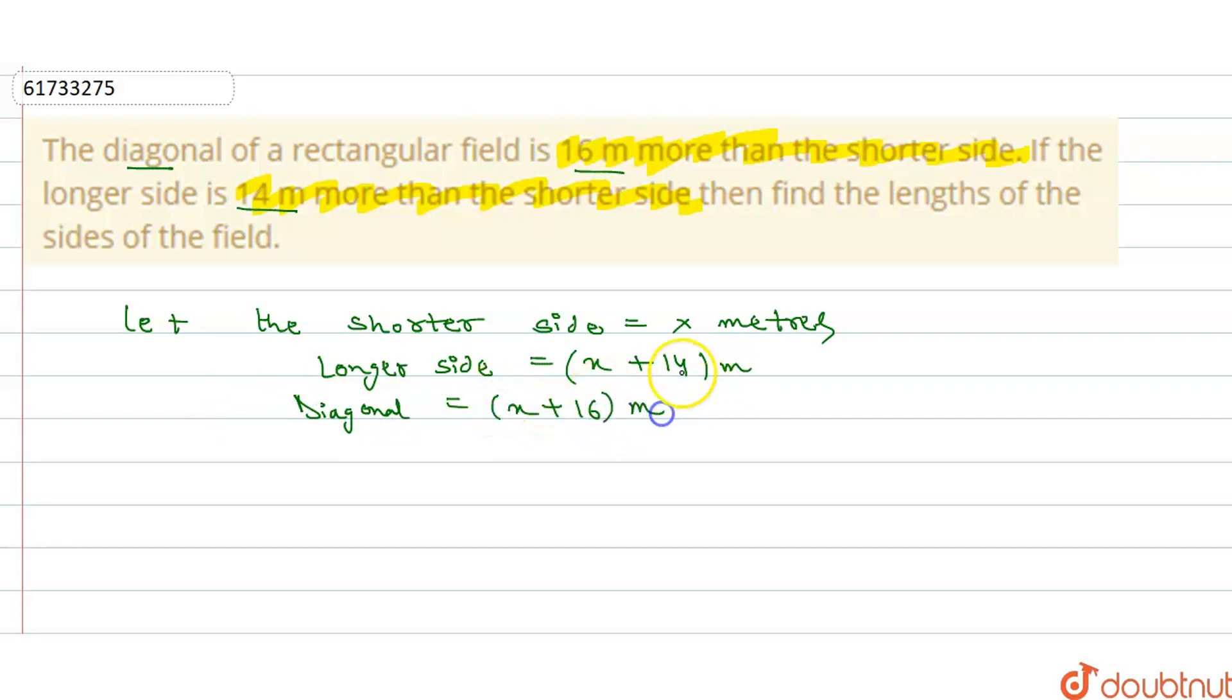So now we have shorter side, longer side and the diagonal. So we will consider that this is a rectangle. Okay? So this is the diagonal, this is the triangle. How much is the diagonal? x plus 16. This is the shorter side, this is the base. And the side is x plus 14. Okay?